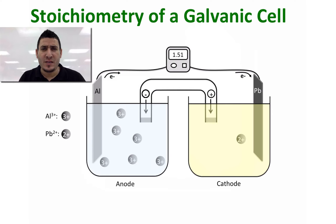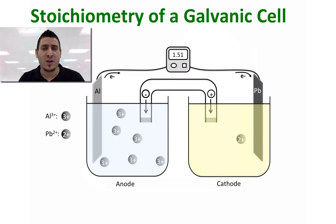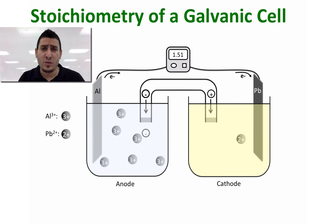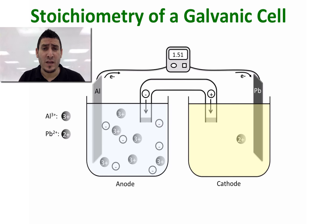As you can see, two particles of Al³⁺ were released in the solution and the charge of the anode compartment was increased by 6+, and this will lead the cell to stop since the anode compartment is getting positively charged. The salt bridge will pump anions into the anode compartment. Since every anion has one negative charge, a total of six anions will be added to the solution.